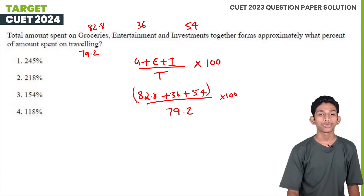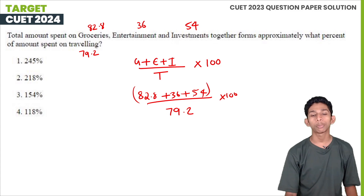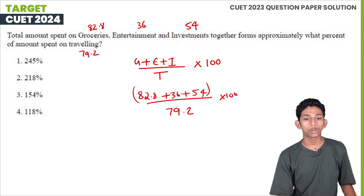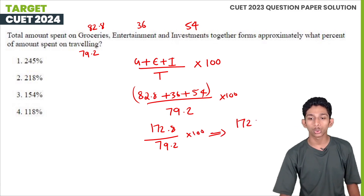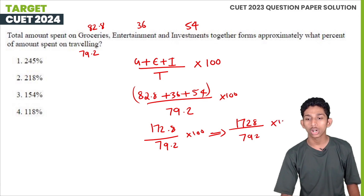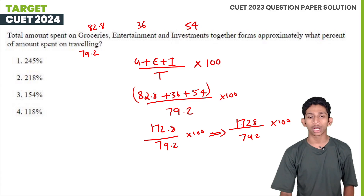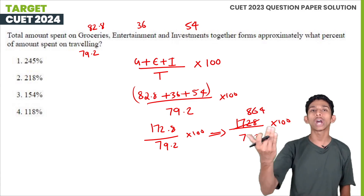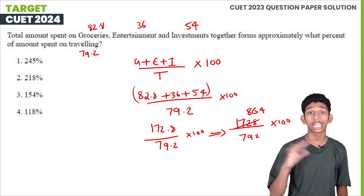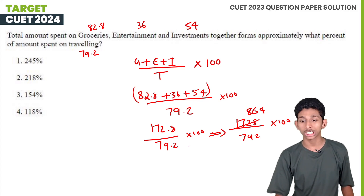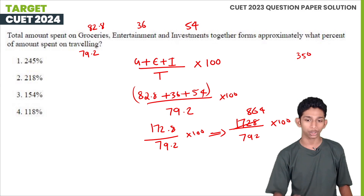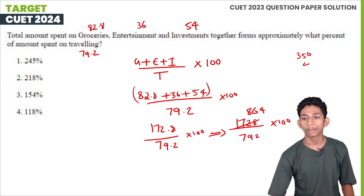So the equation is 172.8 divided by 79.2 into 100. We can simplify 1728 divided by 792. Dividing both by 2 gives 1728 divided by 78, approximately 180 divided by 80. Further simplifying: 1728 divided by 79 is approximately 804.